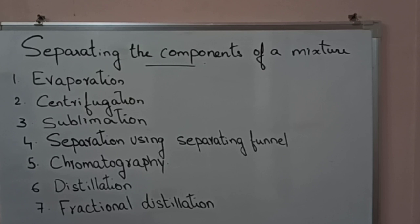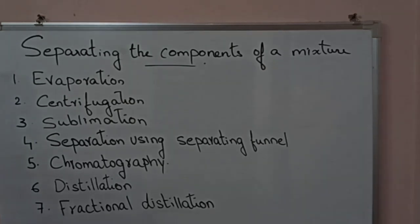Sublimation method is used to separate a sublimable volatile component from a non-sublimable, non-volatile component. For example, to separate ammonium chloride, camphor, or naphthalene — all sublimable substances — from non-sublimable substances like common salt, we can use this sublimation method.